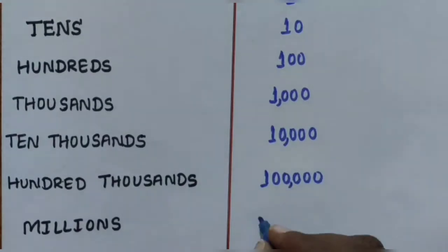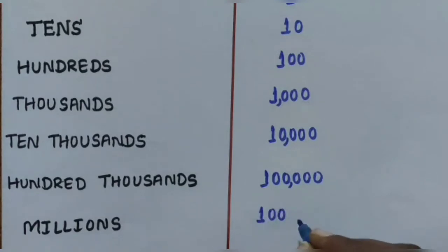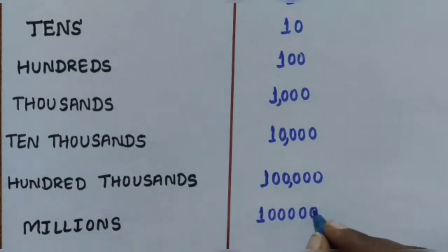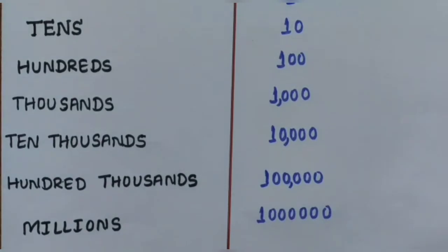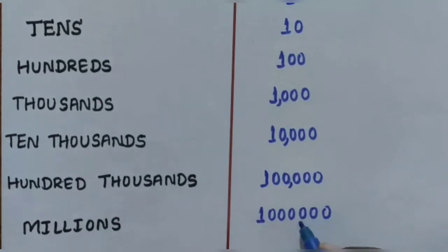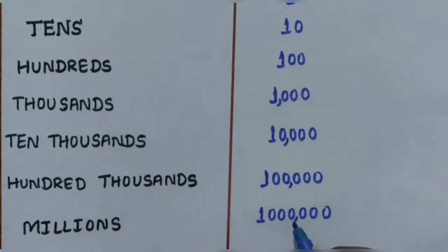Next is Million, written as 1,000,000 - one followed by six zeros. The first comma is applied after the thousands place (after 3 digits from the right), and the second comma is applied for the millions place.